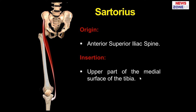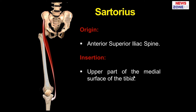Sartorius is one of the important muscles in the pes anserinus. The pes anserinus is mainly formed by three muscles from three compartments: sartorius from the anterior compartment, gracilis from the medial compartment, and semitendinosus from the posterior compartment. The functions of the sartorius are flexion and lateral rotation of the hip joint, as well as weak abduction at the hip joint. At the same time it performs flexion and medial rotation of the leg at the knee joint.